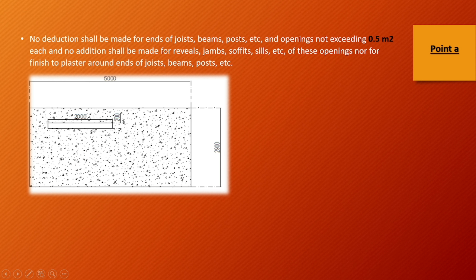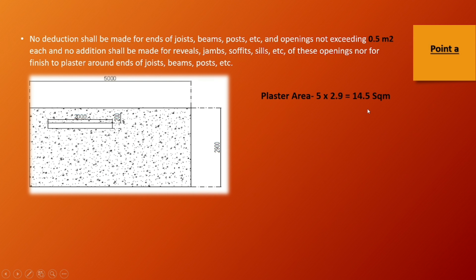So you have to look at this opening. You will see a wall here. You have to look at jamb, soffit and sill — all are zero. The wall area is 5 times 2.9 equals 14.5. And the cut-out on your left is 2 times 2, which is less than 0.5 square meter. So you will not have to deduct from this area — you will take the full area of 14.5.